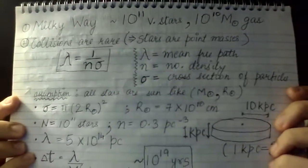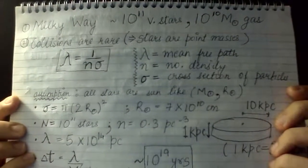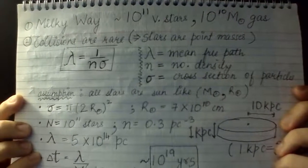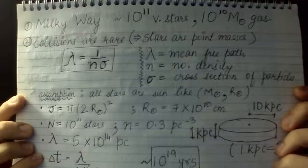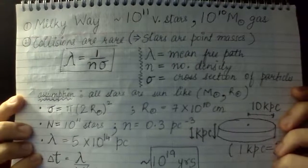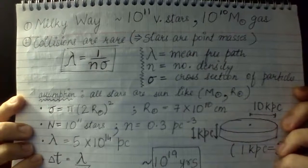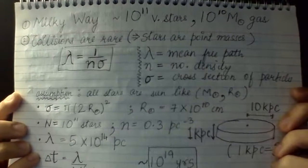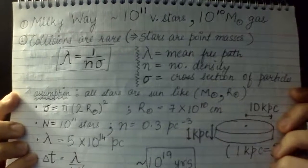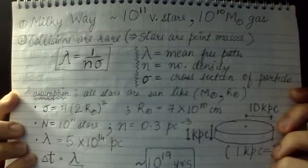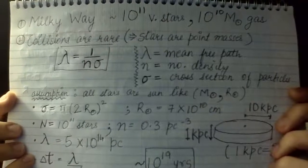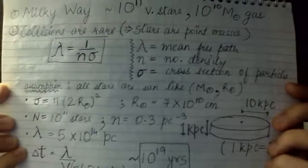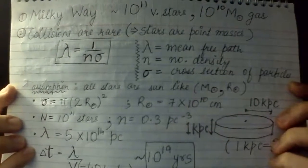Welcome to the first lecture of the galactic dynamics lecture series. In this lecture I'll be throwing in some numbers so that we realize the situation — how our galaxy in particular looks like, how many stars it has, what the velocity of the stars typically is, and stuff like that. I'll also be talking about certain assumptions and approximations.